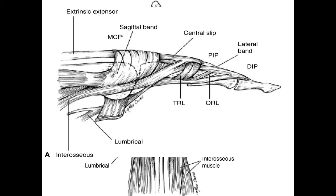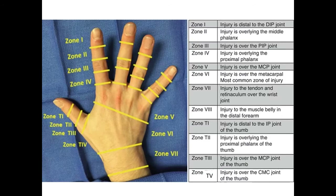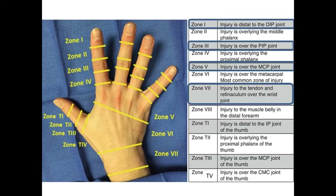An important point when examining a patient is to ensure you're looking for extension at the MCPs and not the PIPJs or DIPJs. The zones of the extensors are named based on distance from the tip, and it's easy to remember as the odd numbers are usually over the joints.